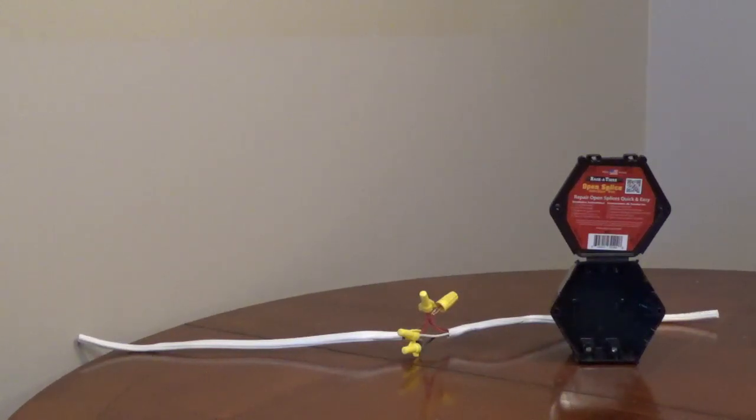Exposed wiring splices are sometimes found in attics and crawl spaces and need to be joined inside a junction box for safety and to be code compliant.